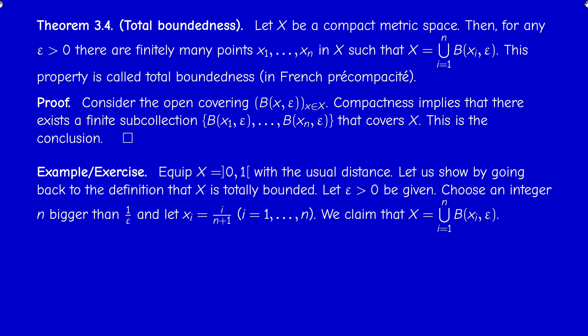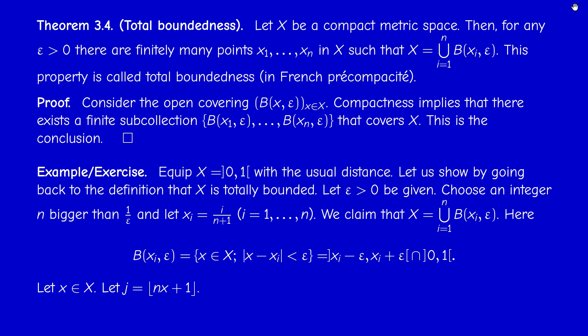We claim that the union of balls of center x_i and radius epsilon, for i from 1 to n, covers X. By definition, each ball is the set of points in [0,1] whose distance to the center is less than epsilon — equivalently, the usual ball in ℝ intersected with [0,1]. To prove this, take an element x and show it belongs to one of these balls. Take J to be the floor of (n·x + 1).